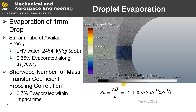A secondary analysis for comparison refers to the Chilton-Colburn analogy defined in Tront in 2013. A mass transfer coefficient is identified by the Sherwood number, which represents the convective mass transfer rate to diffusive mass transport rate. Frostling's correlation is used to define Sherwood number in terms of Reynolds number and Schmidt number. Progressing with this calculation yields a mass evaporative rate and projects 0.7% of total droplet mass loss within the impact time.